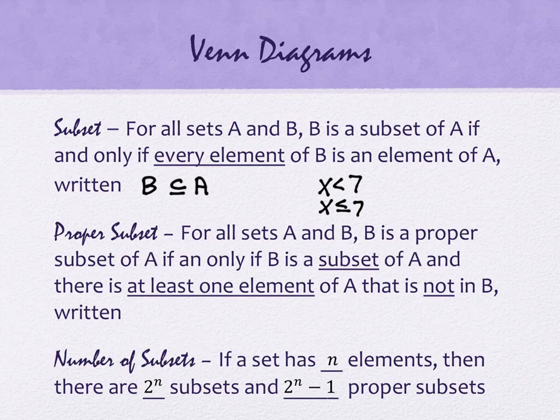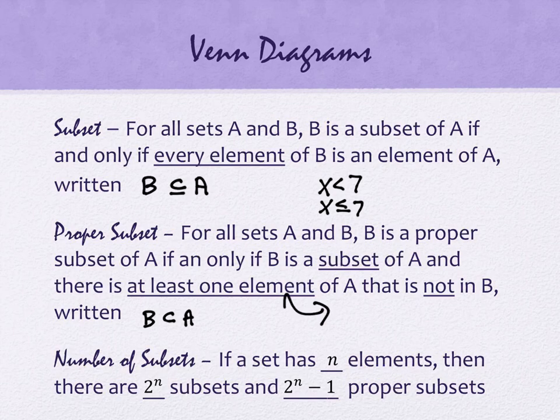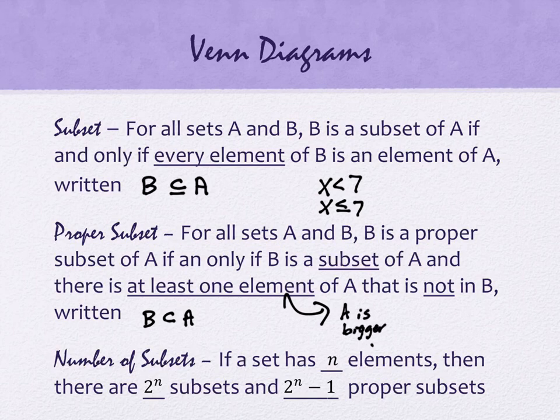So if we remove that line underneath, we have the second description on this slide. Proper subset. So a proper subset. So for all subsets A and B, B is a proper subset of A if and only if B is a subset of A, and there is at least one element of A that is not in B. So it looks like this. We just remove the line from underneath. And another way of saying this, this at least one element of A that's not in B, is that we can actually say that A is bigger. Or you could say, likewise, B is smaller. It actually has to be smaller or bigger for that description to work.